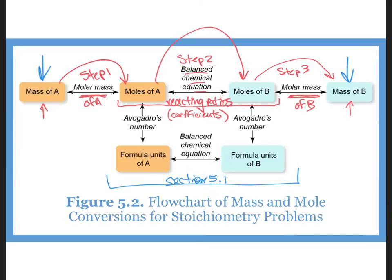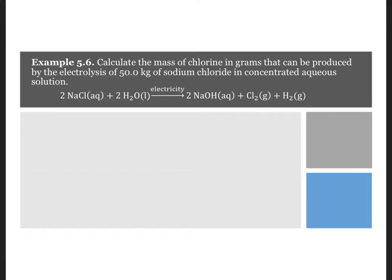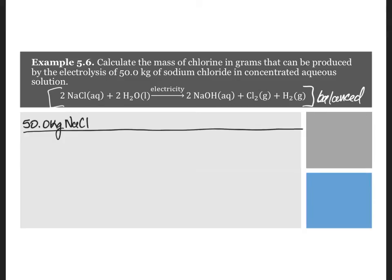Let's try this process out. Calculate the mass of chlorine in grams that can be produced by the electrolysis of 50 kilograms of sodium chloride. We have a balanced chemical equation, so we can jump right into the calculations. We're given kilograms of sodium chloride, so we must convert to grams.